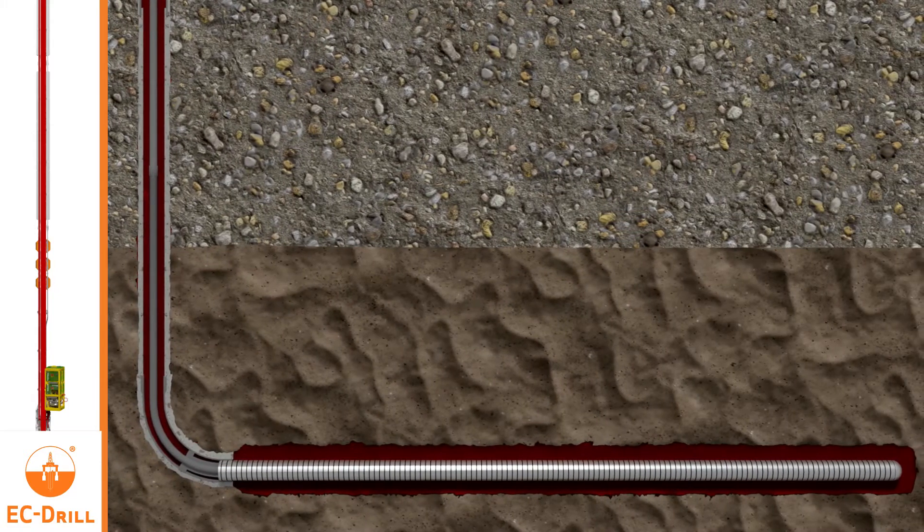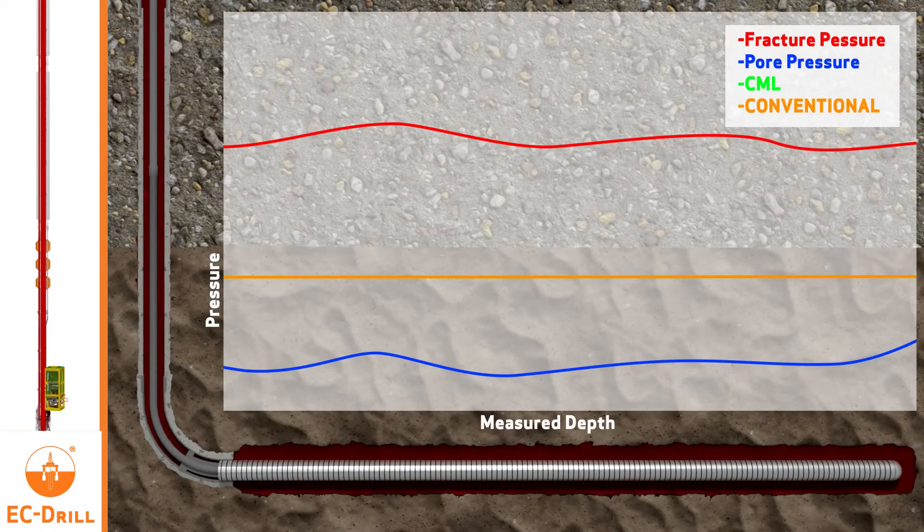Controlling the fluid level in the riser can be used during running the lower completion string to compensate for surge pressures so the screens reach the desired depths.